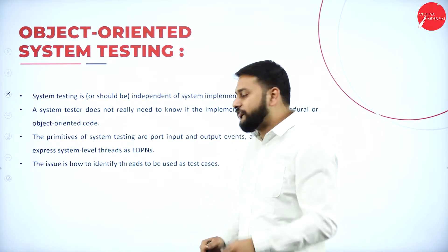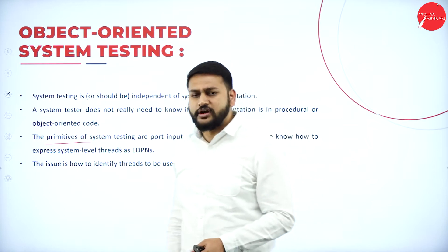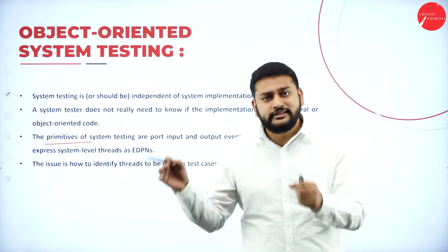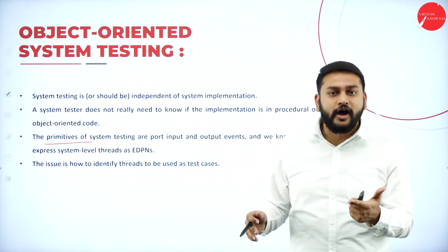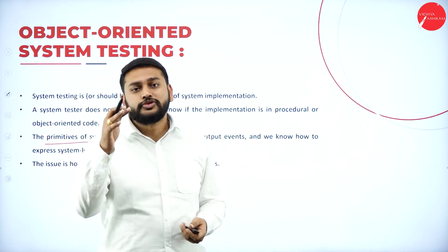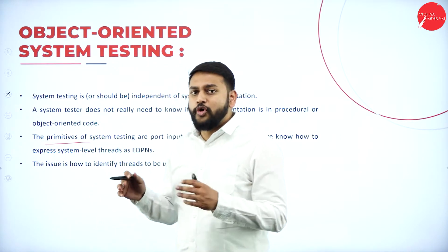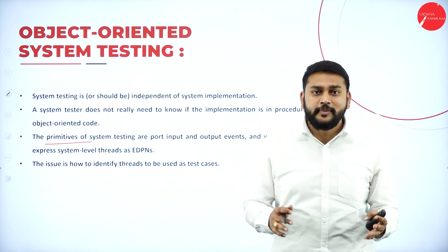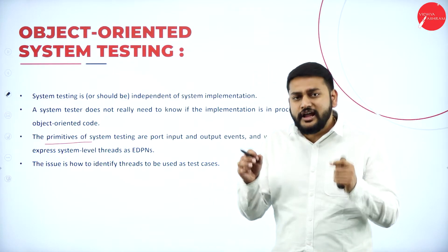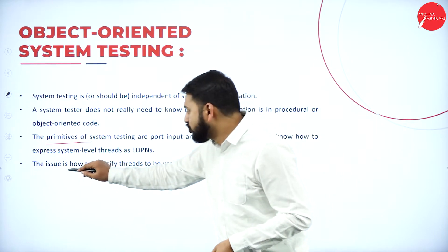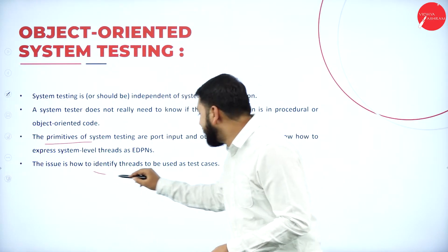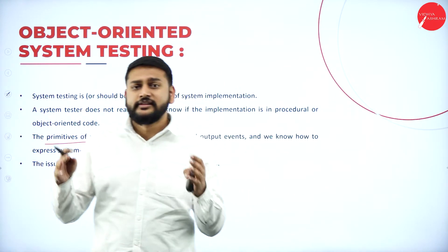When it comes to primitives — the fundamental or basic things — in system testing, the main important things are the inputs and the outputs. What exactly is the input and what is the output: those are the more important considerations in system testing. The last important point in this slide is: how do we identify the threats to be used as test cases? That's the most important thing to understand.